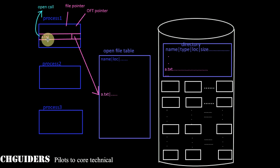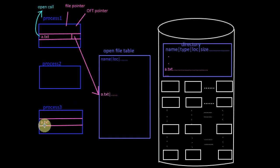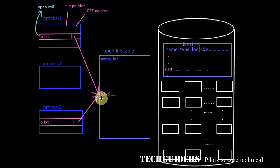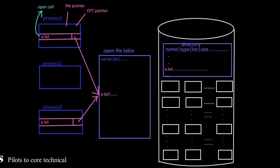If the same file is opened by another process at the same time, the open file table entry already exists. Thus, a new per-process table entry is created with a pointer pointing to the same file entry in the open file table. Finally, the open call returns a pointer to this per-process table entry.